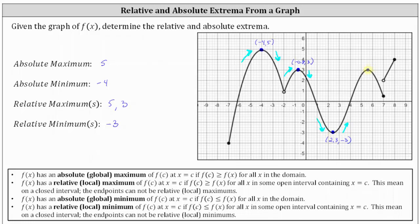Next, we have a high point where the ordered pair is approximately 5.6 comma 3. There is an open interval containing x equals 5.6, and this point is a high point. Therefore, the y value of 3 is a relative maximum, which occurs at x equals 5.6. Notice we already listed 3 as a relative maximum, so we don't list it again. The relative maximum of 3 occurs at two locations: x equals negative 0.8 and x equals 5.6. Notice the function changes from increasing to decreasing at this point.